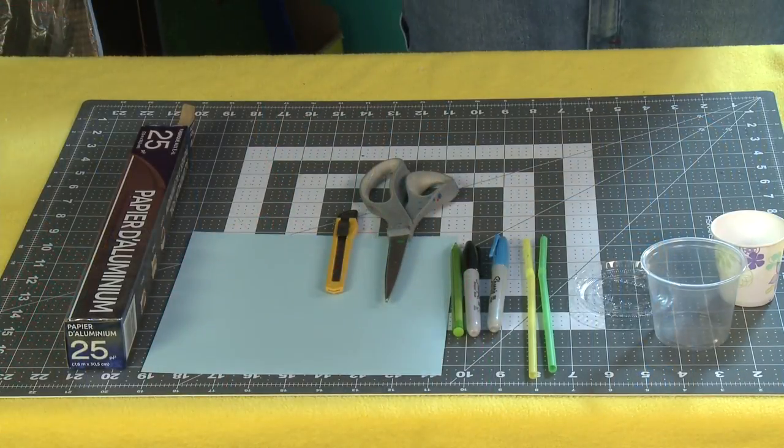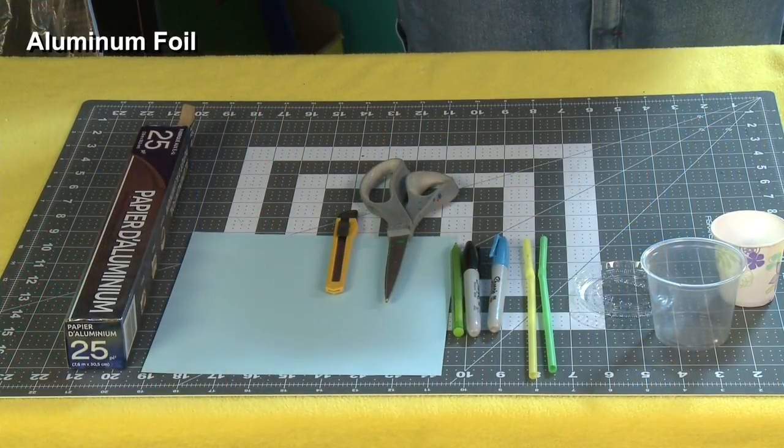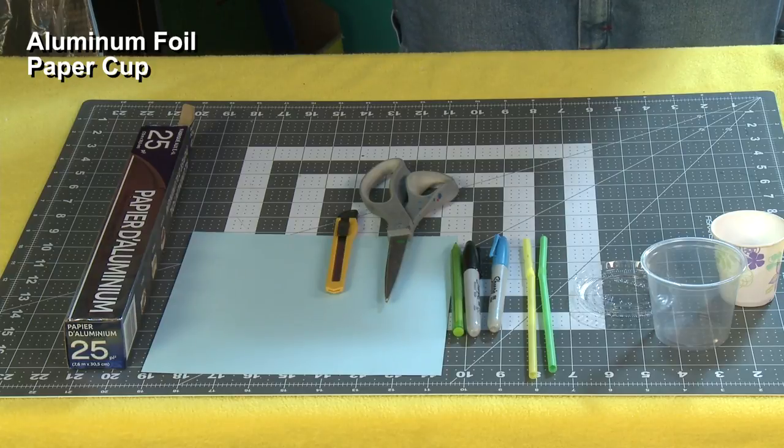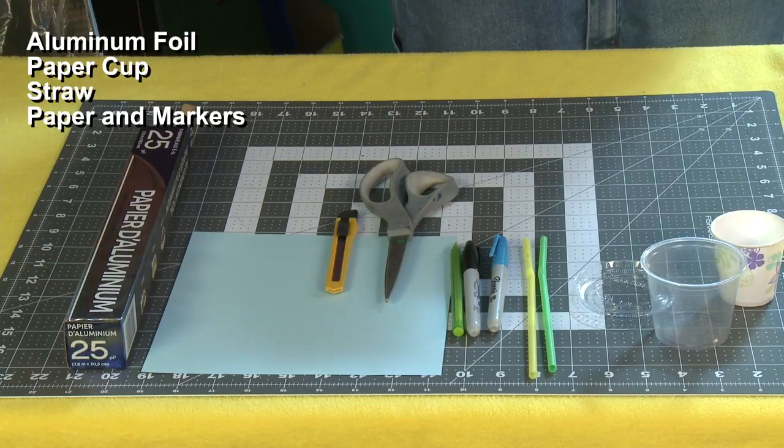For this project, you will need aluminum foil, paper cup, straw, paper and markers, and scissors.